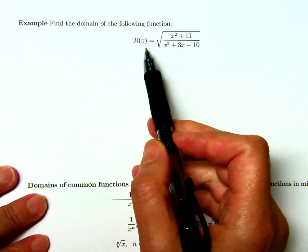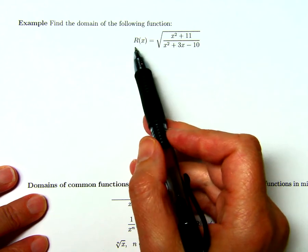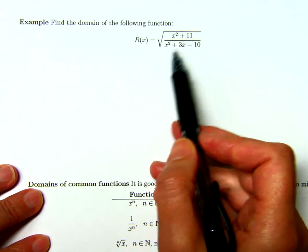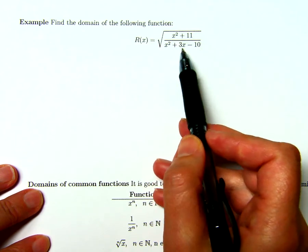Let's find the domain of this function, which is also called r of x, and it's the square root of x squared plus 11 over x squared plus 3x minus 10.